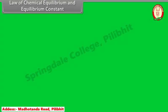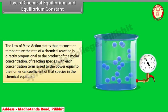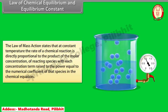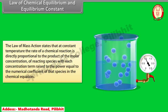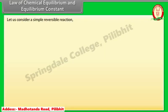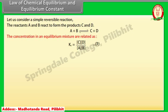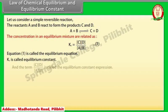Law of Chemical Equilibrium and Equilibrium Constant. The law of mass action states that at constant temperature, the rate of a chemical reaction is directly proportional to the product of the molar concentrations of reacting species, with each concentration term raised to the power equal to the numerical coefficient of that species in the chemical equation. For a simple reversible reaction where reactants A and B form products C and D, the equilibrium constant expression is Kc, called the equilibrium constant.